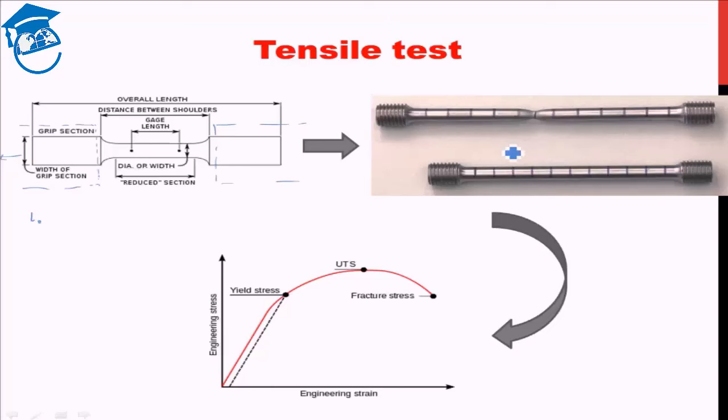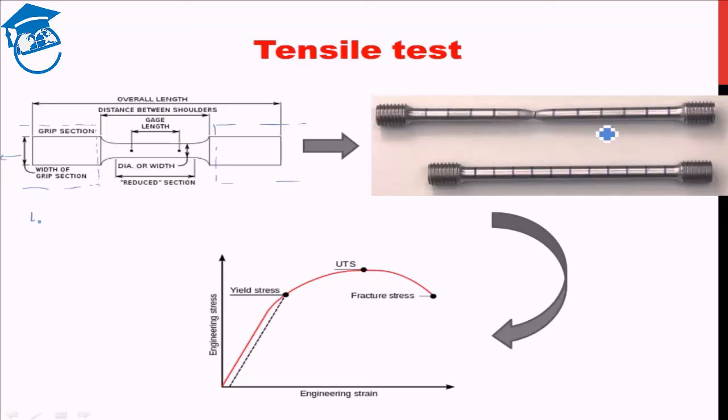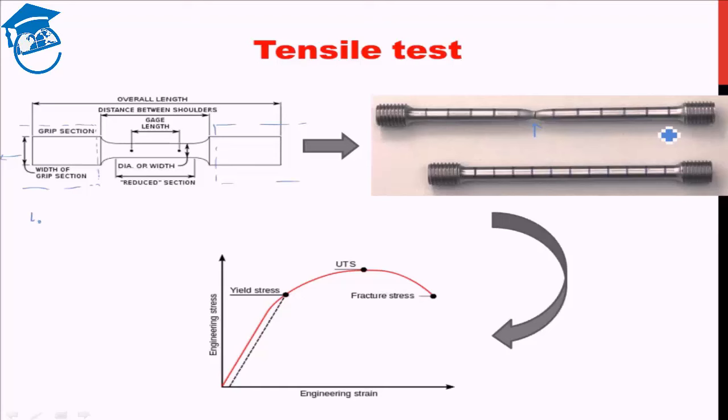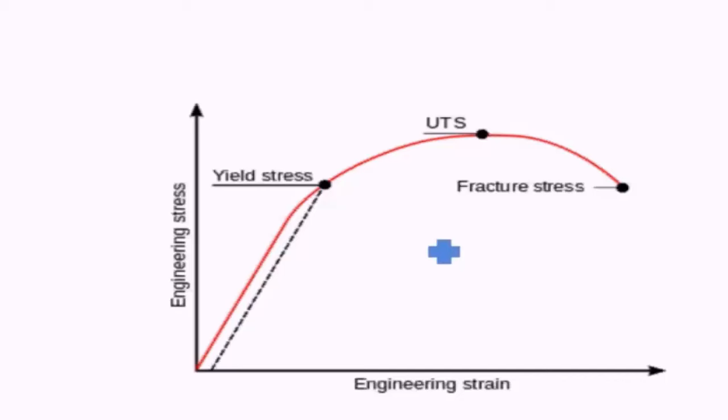After testing, you can see that the sample has undergone necking — this is known as necking. If the tensile test is continued further, there will be a fracture and the material will break into two pieces. This test gives us the engineering stress versus engineering strain diagram.